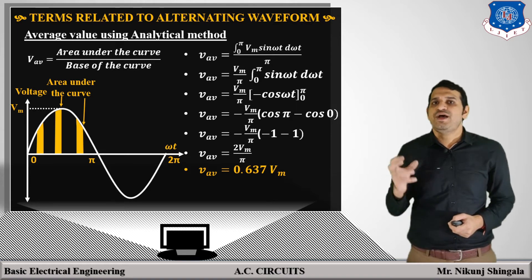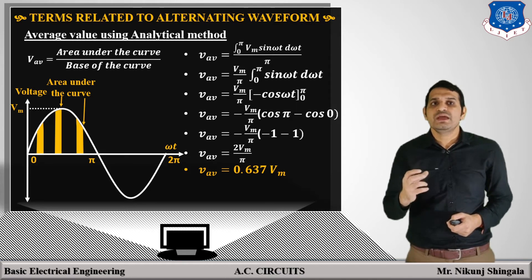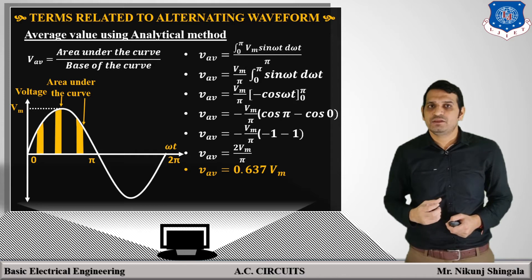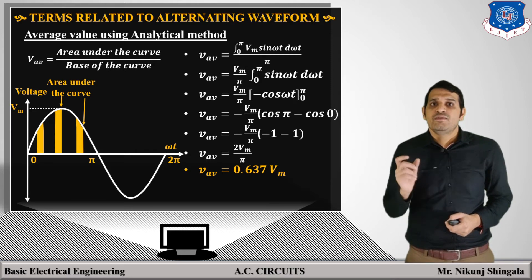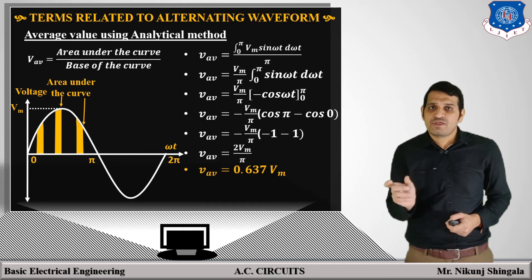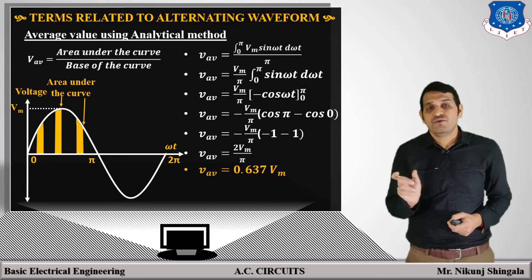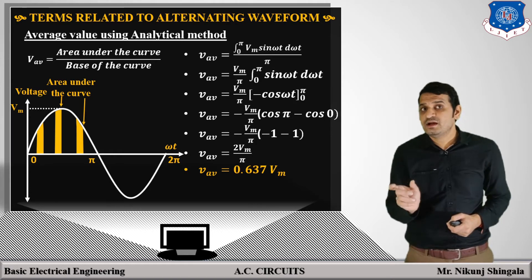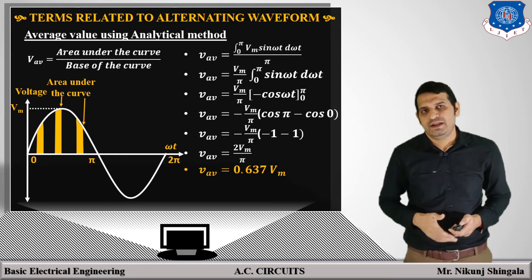So this is how we can calculate the average value using the analytical method. The point to be noted here is that we take the half cycle if the waveform is symmetrical, and we take the full cycle if the waveform is asymmetrical.